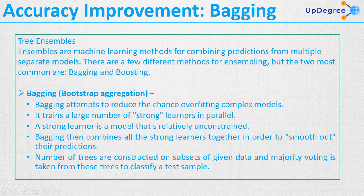First, we are discussing tree ensembles. Ensemble is a machine learning concept in which multiple models are trained using the same learning algorithm. Bagging is a way to decrease the variance in the prediction by generating additional data for training.